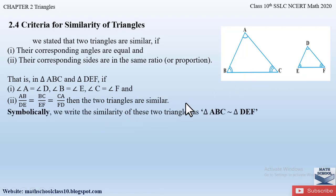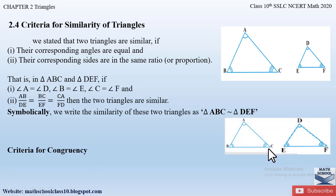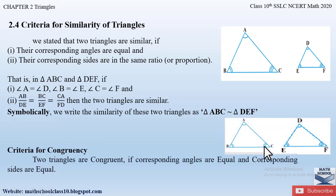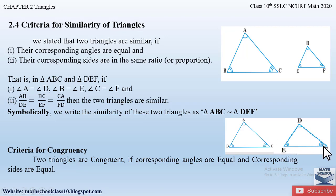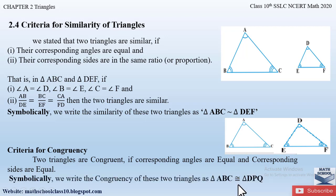Symbolically we write triangle ABC is similar to triangle DEF. We also studied the criteria for congruency: two triangles are congruent if the corresponding angles are equal and the corresponding sides are equal. For example, if AB is 3 cm then DE must also be 3 cm; similarly BC must equal EF and AC must equal DF. This symbol represents congruency, so triangle ABC is congruent to triangle DPQ.